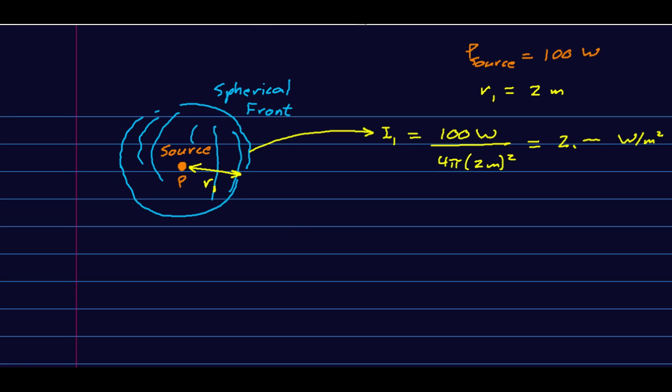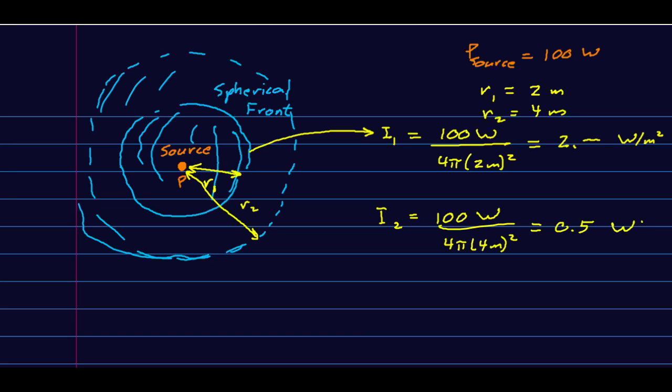Now if we walk across the room, so that instead of being 2 meters from the speaker we are now, let's say, 4 meters from the speaker, then we see that same amount of power is spread out over this larger spherical front. So I2, the intensity at that distance from the speaker, is going to be 100 watts over 4 pi times 4 meters squared. Note, that's going to be one quarter of what we found here, or about 0.5 watts per square meter.